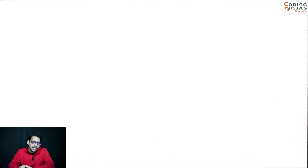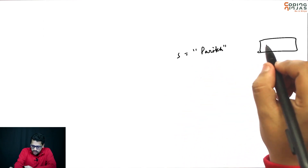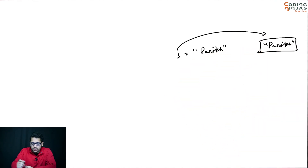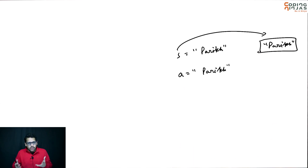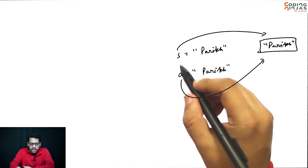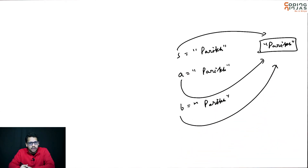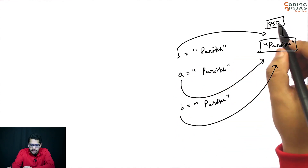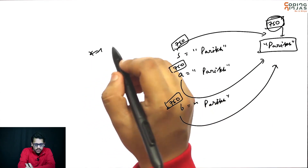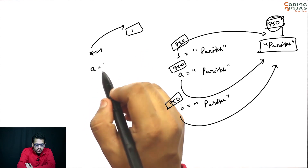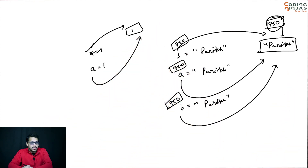One more important point: Python applies some optimization in case of strings. Let's say you do s equal to 'parec' — somewhere 'parec' will be created and s will have the reference of it. If you create another variable a equal to 'parec', for smaller strings, a will refer to the same 'parec'. So s and a and b will all point to the same 'parec' at address 750. This is similar to what happens with smaller integers — if you do x equal to 1 and a equal to 1, both store the same reference.